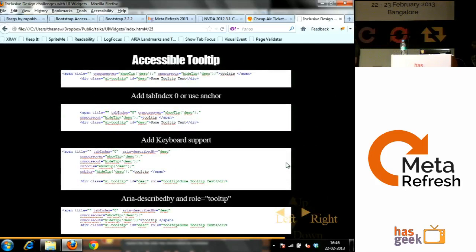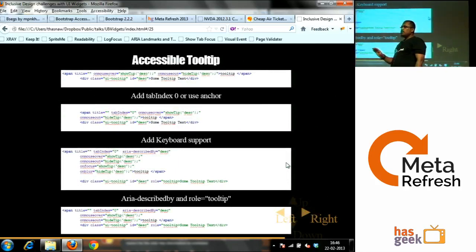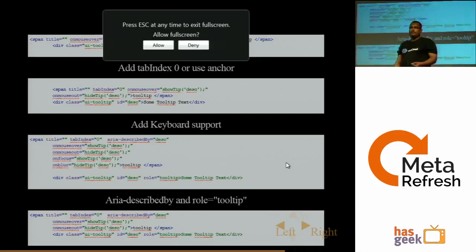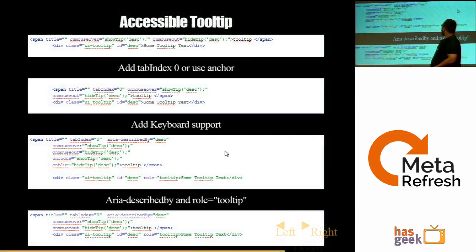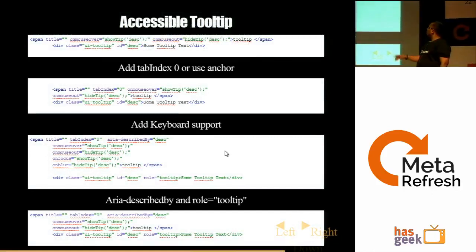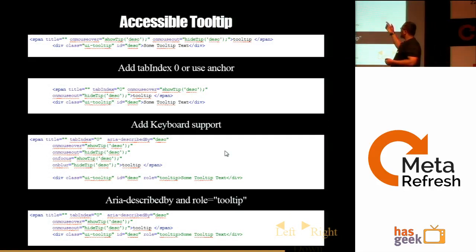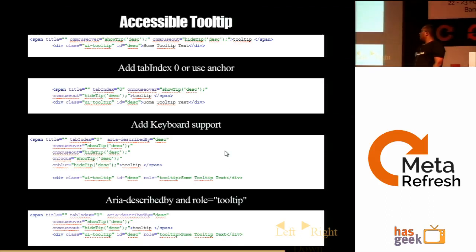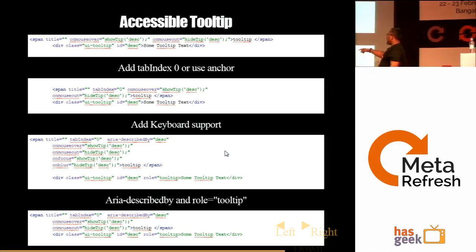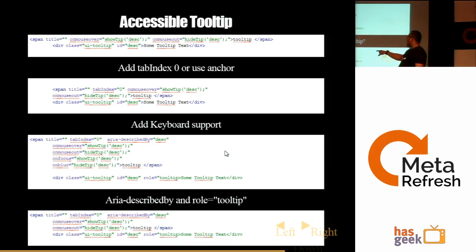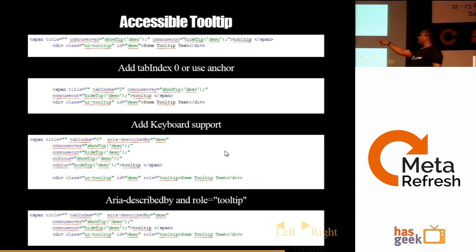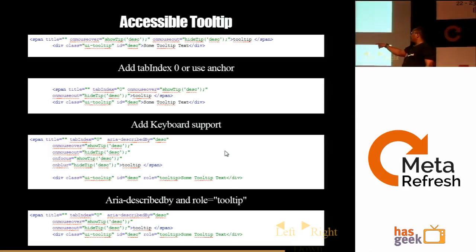For an accessible tooltip: one problem with the default Windows tooltip is you move the mouse over it and it shows the tooltip, but if you receive focus via keyboard it will not show. To make it accessible, first add tabindex=0 or use an anchor tag which is naturally focusable. Then add keyboard support using onfocus and onblur. Finally, add aria-describedby and role='tooltip'. The aria-describedby says the element receiving focus — the span element — is described by the tooltip element, and the tooltip element has role='tooltip'.